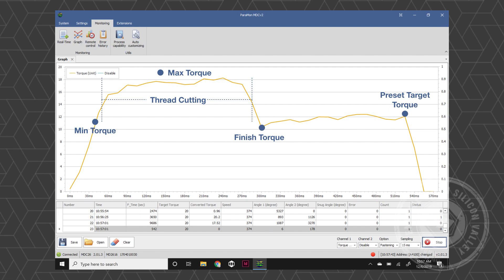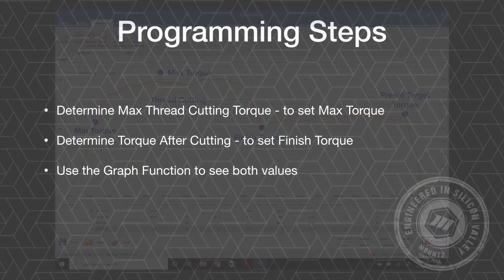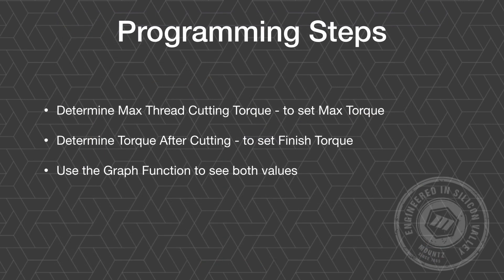For programming steps, we just need to determine what the maximum thread cutting torque is, determine what the finishing torque needs to be, and we can use the graph function to see both of those values to set those parameters.